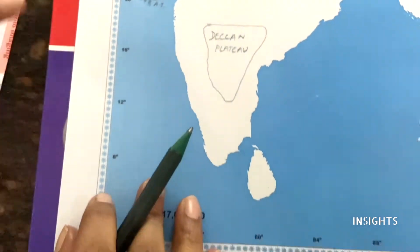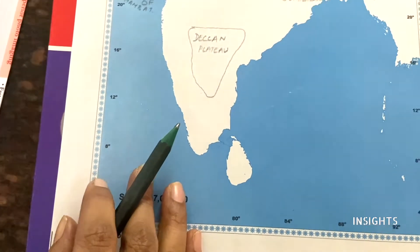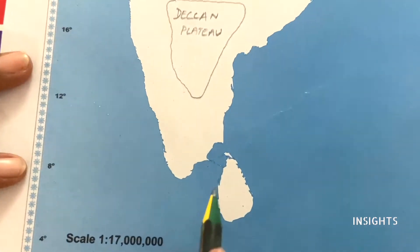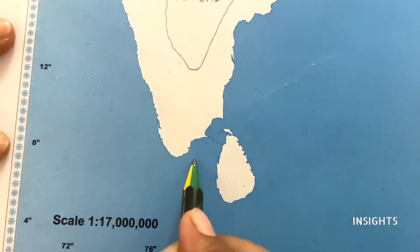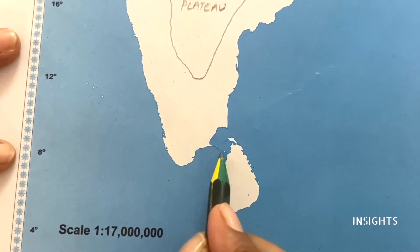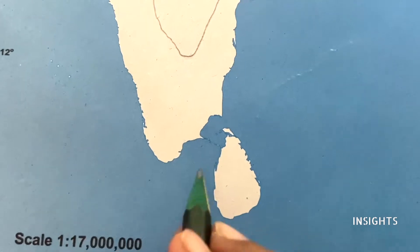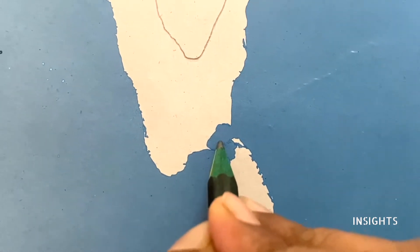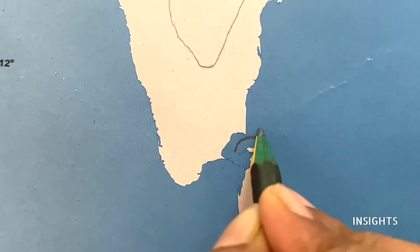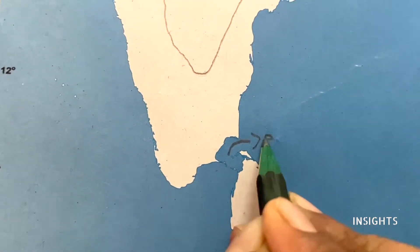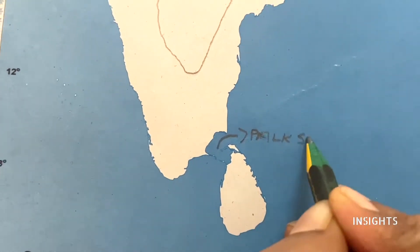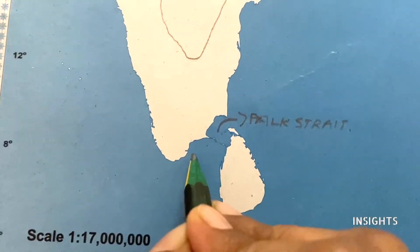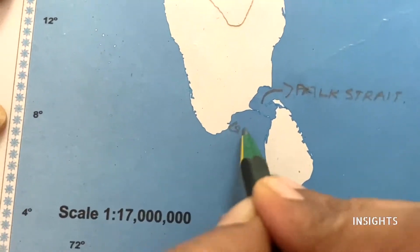Down south, we have two things. There is Rameshwaram Island, and in the area below that is the Gulf of Mannar.